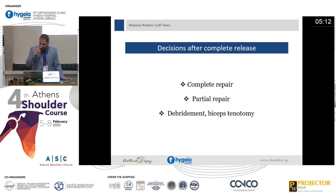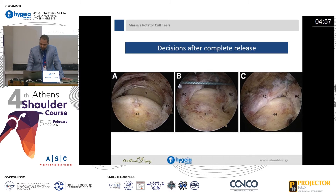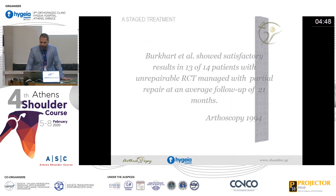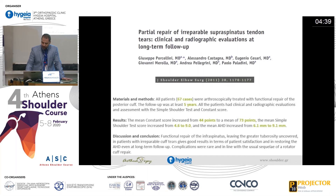Here we can see a first image with a very retracted supraspinatus tear. In the second image, we perform a side-to-side repair, and in the third image, a partial repair. There are many papers showing that even with a partial repair, we can achieve better outcomes — we can improve the Constant score, the ASES score — and the patient will have painless or minimally painful range of motion.